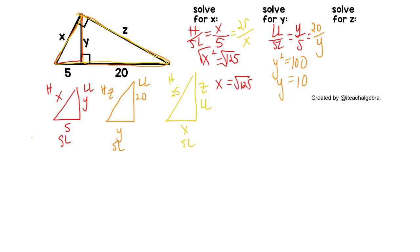Last but not least, we want to solve for Z. We've got Z as the long leg in the yellow triangle and the hypotenuse in the orange. So to solve for Z, we're going to do hypotenuse over long leg. So we've got Z over 20 equals 25 over Z. Cross multiply, we get Z squared is 500. Square root, Z is the square root of 500.